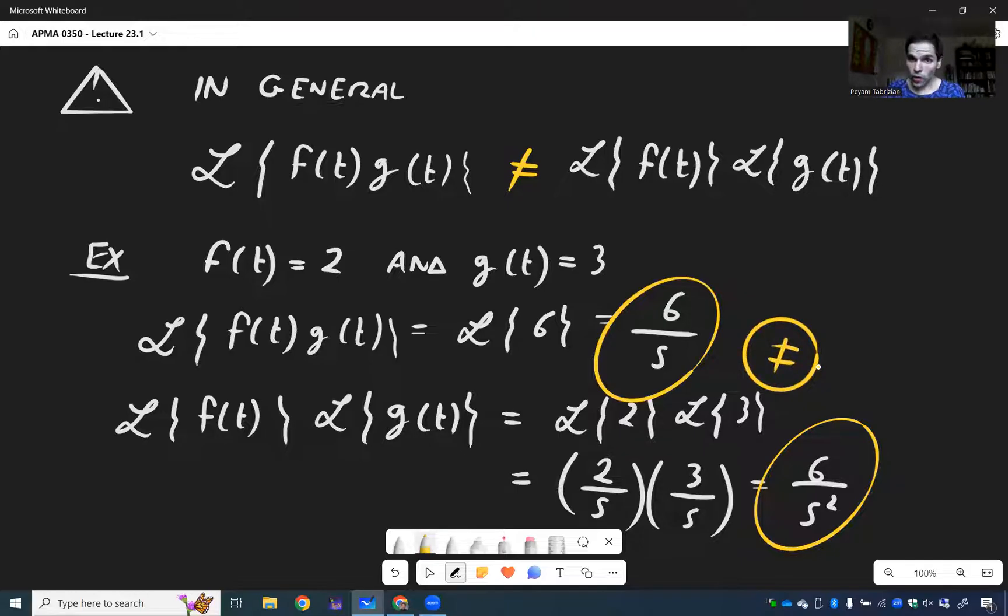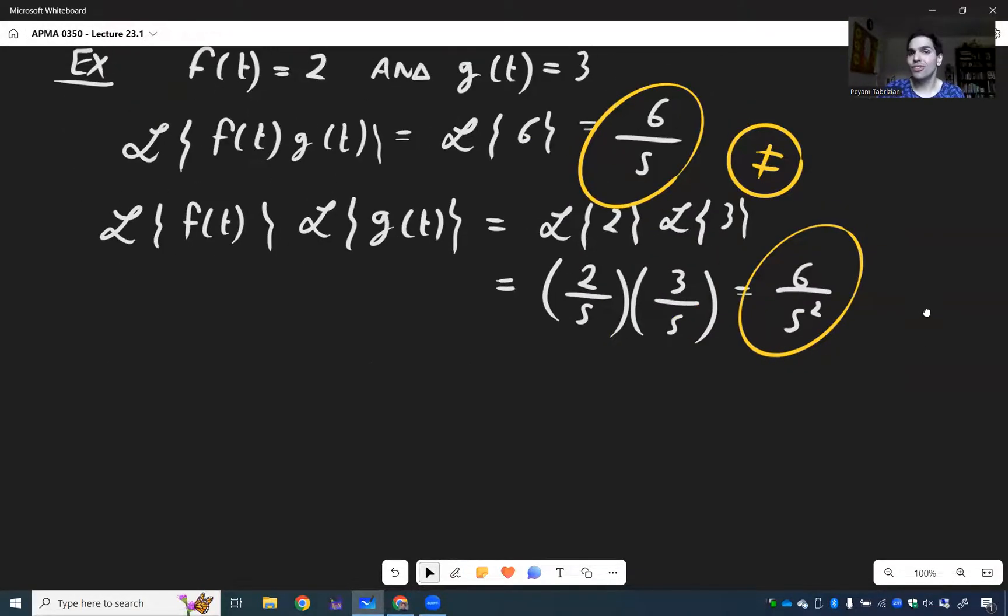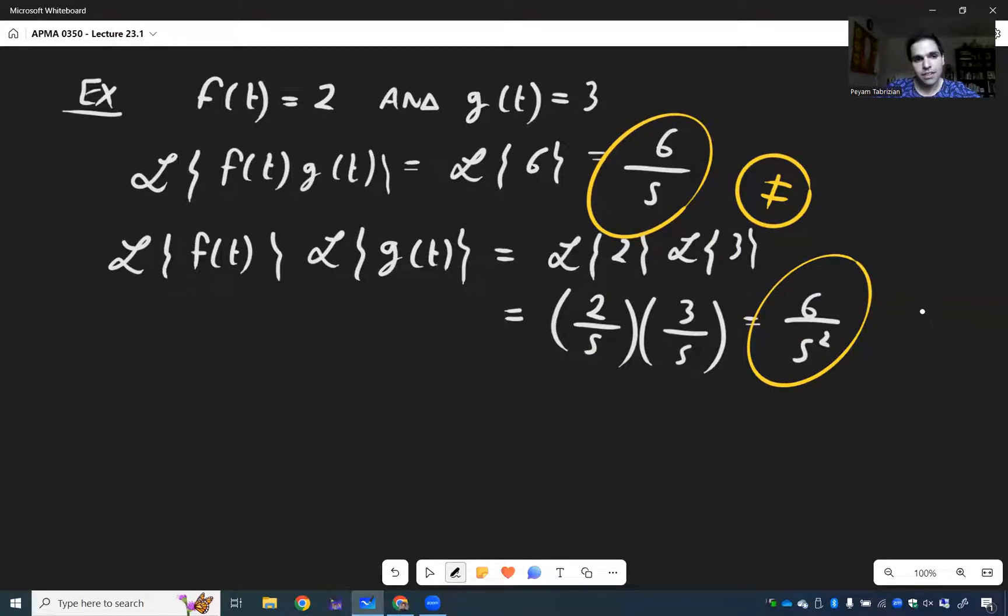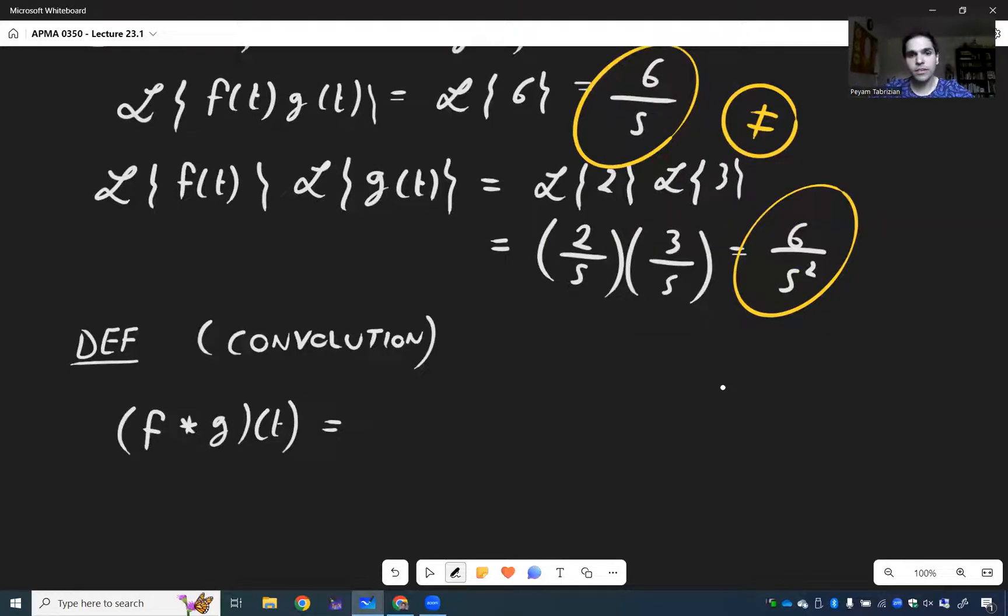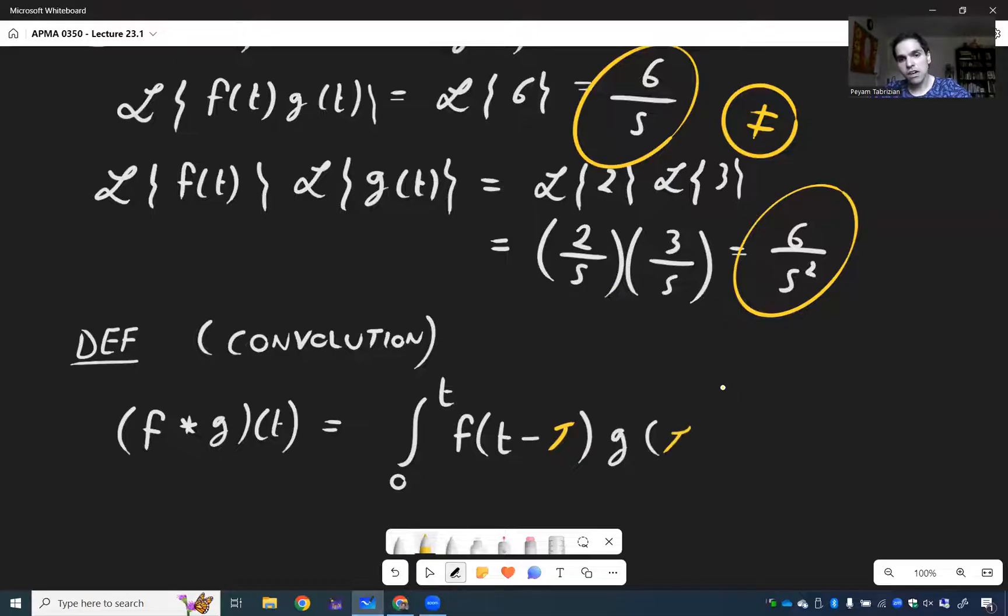But, if you do the product of the individual Laplace transforms, L of f times L of g, that becomes L of 2 times L of 3, which is 2 over s times 3 over s, and that is 6 over s squared. And those two things are not the same.